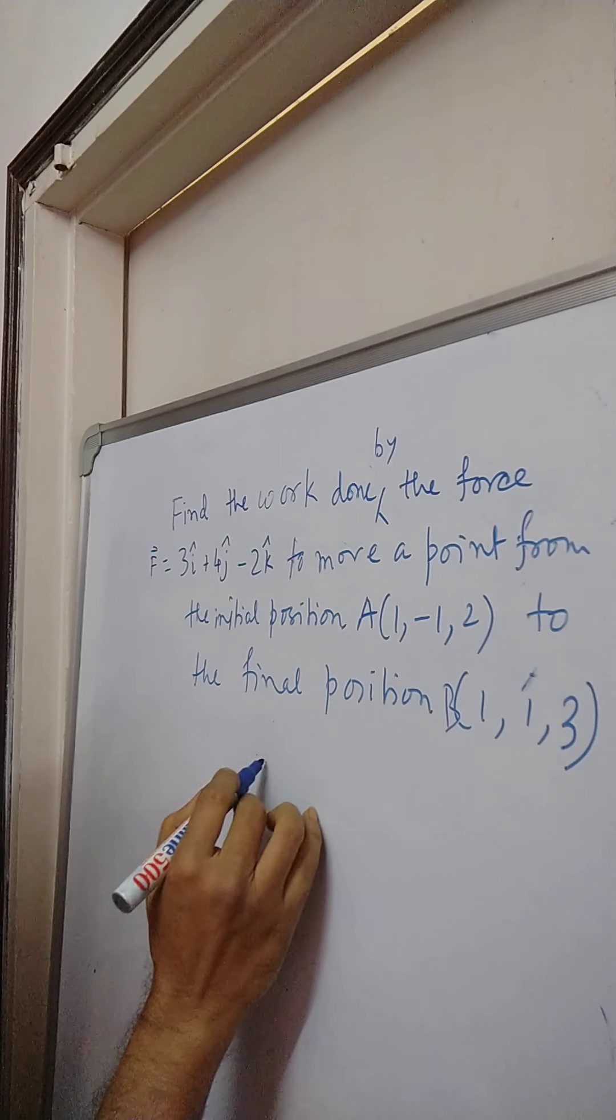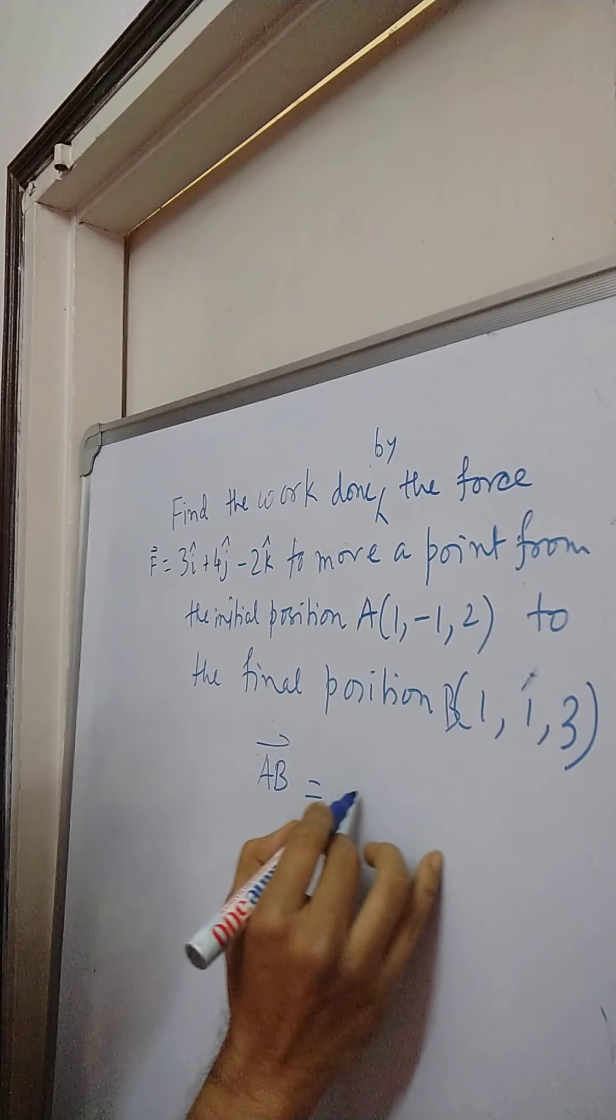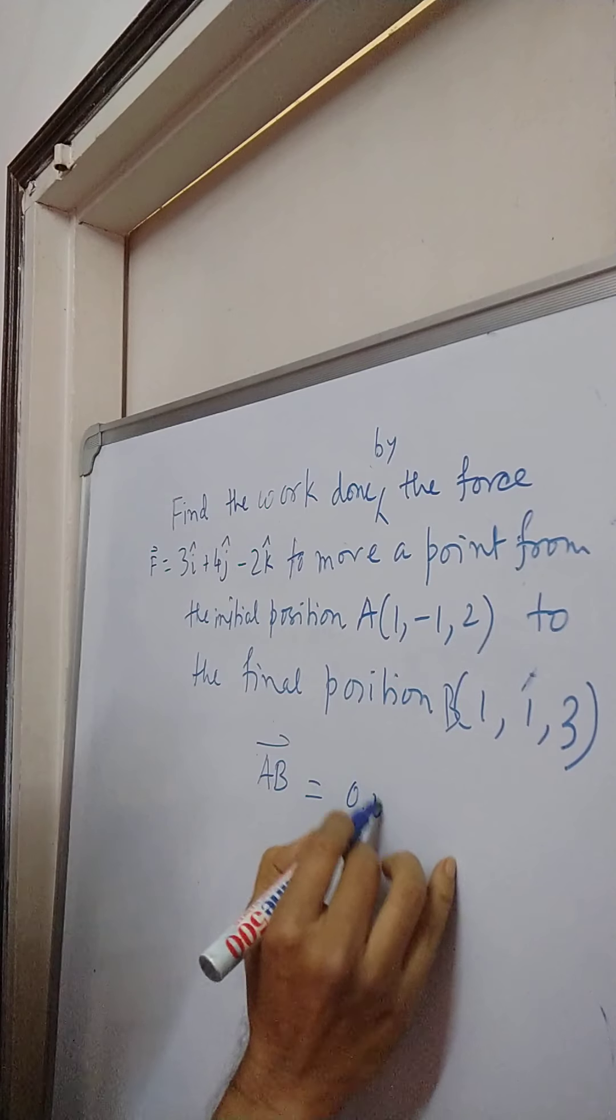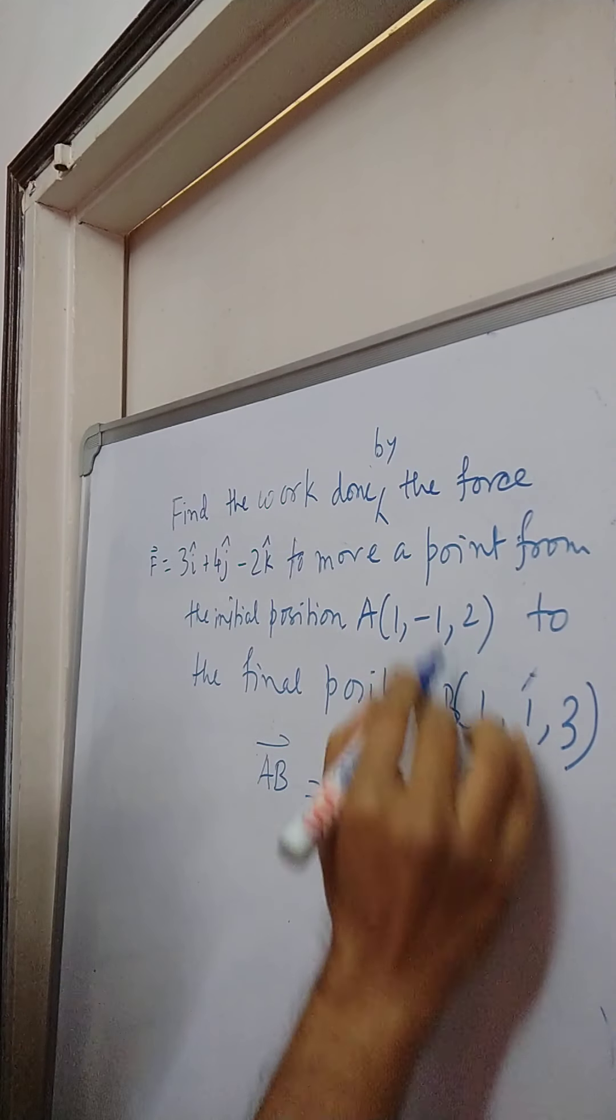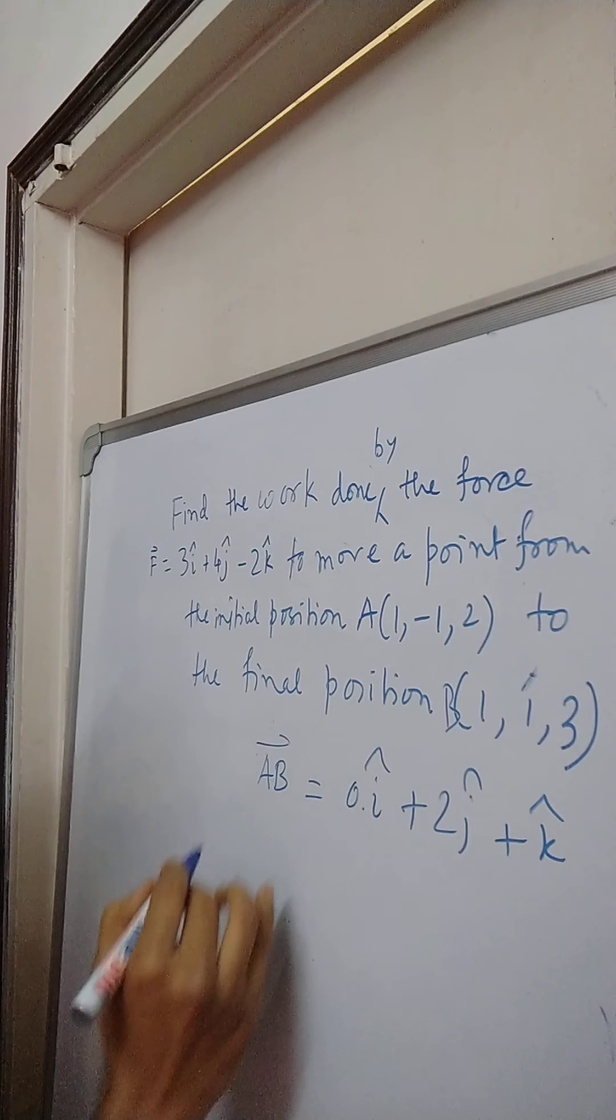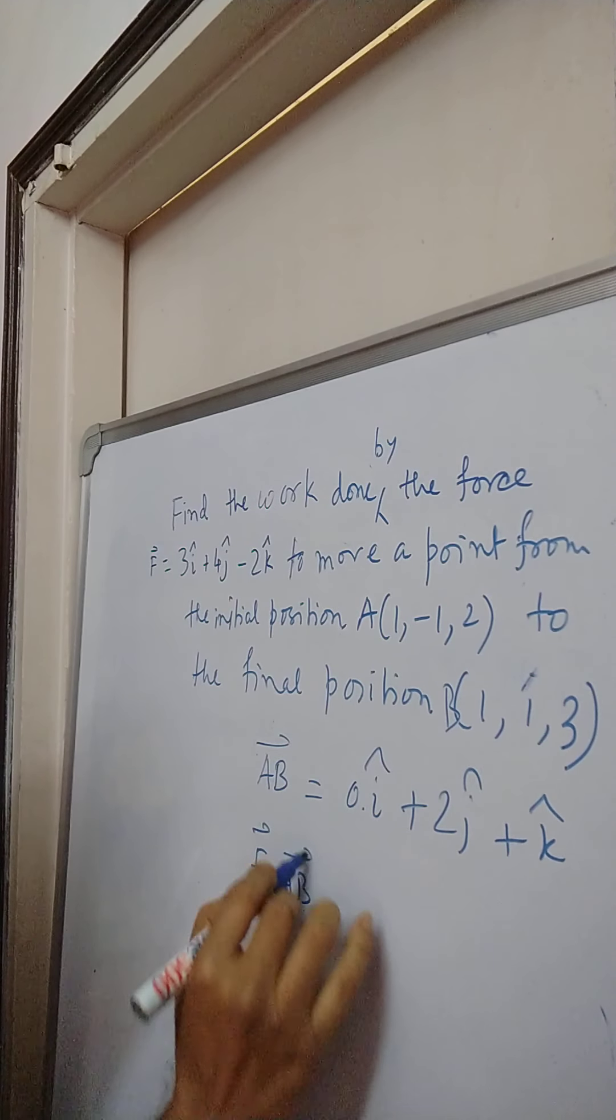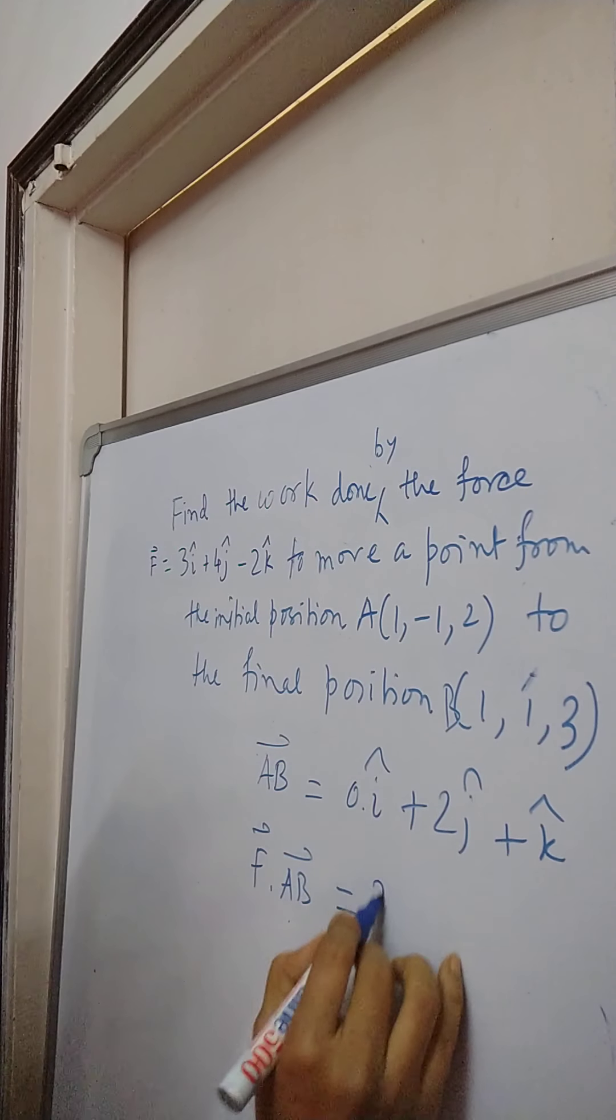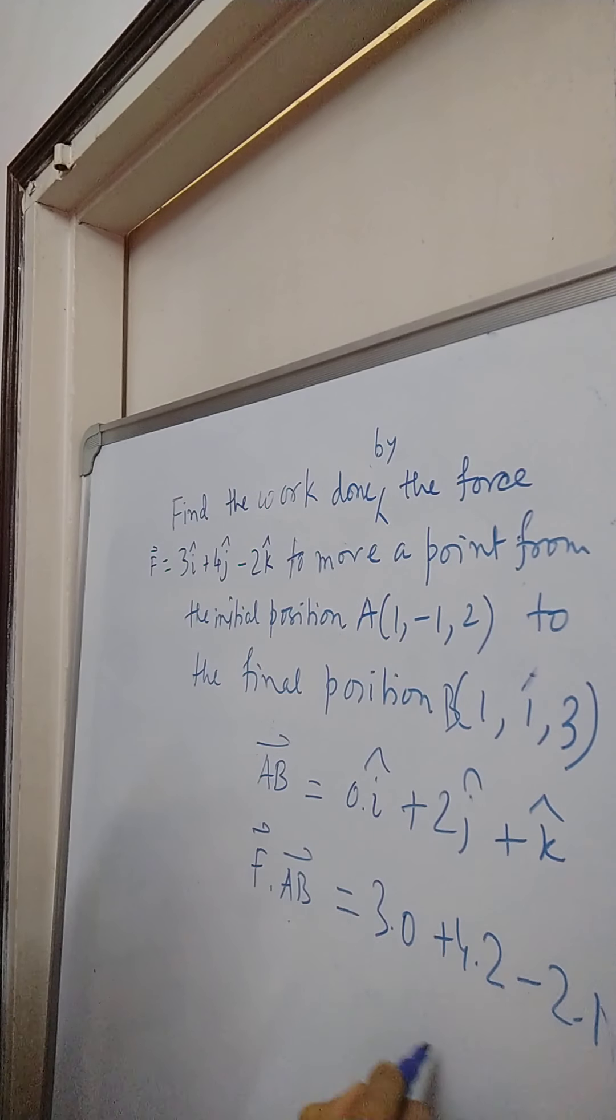What is the displacement? Displacement is the vector AB, and that becomes 1 minus 1, so 0 into i cap, 1 minus of minus 1, 2 j cap, and 3 minus 2 is k cap. F dot AB is the work done, so that turns out to be 3 into 0 plus 4 into 2 minus 2 into 1, 8 minus 2 is 6.